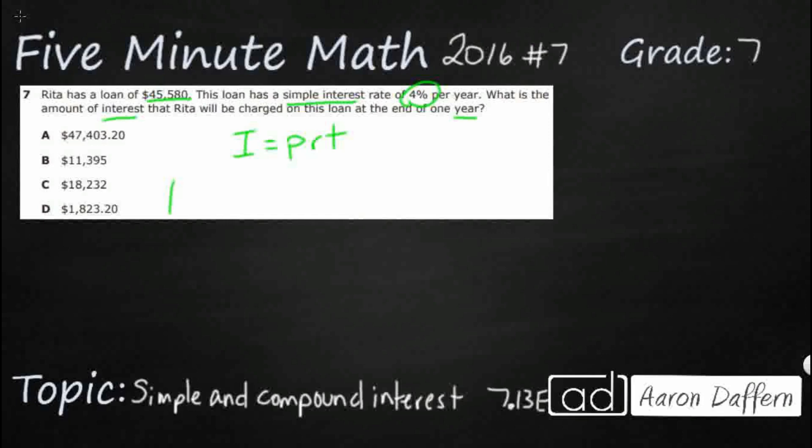So what we're looking for is our interest. Now this is simple interest. If it says compound interest, that is calculated completely differently. So I'm just going to put simple interest right here. Since our problem said we are looking for simple interest.